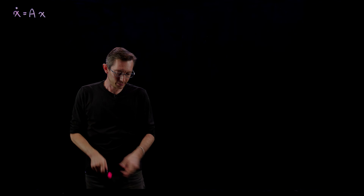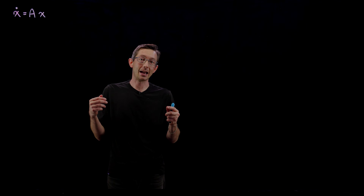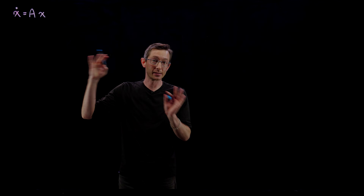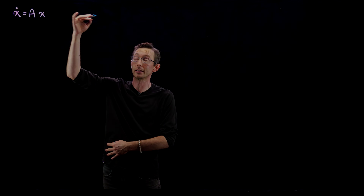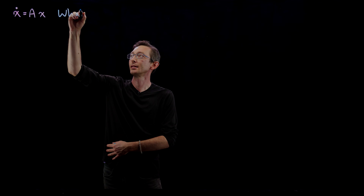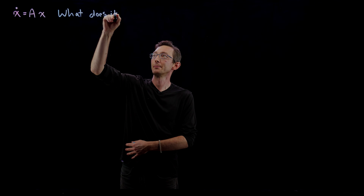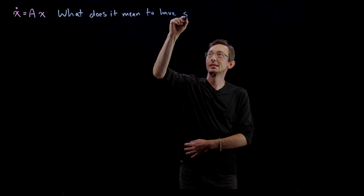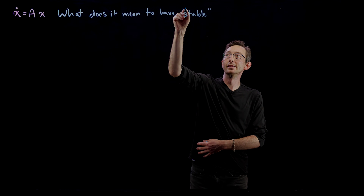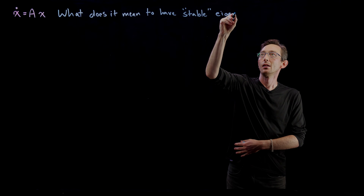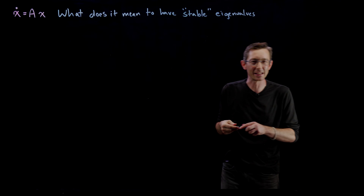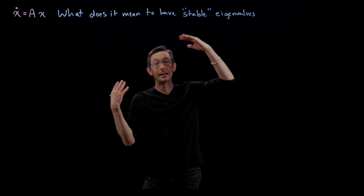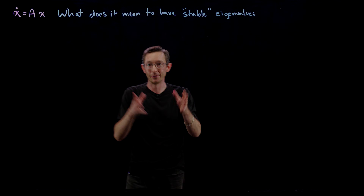I say a lot that this matrix A has stable eigenvalues or unstable eigenvalues. I want to slow down in this lecture and very clearly explain what I mean by that — what does it mean to have stable or unstable eigenvalues? I use this phrasing all the time, and I want to make it very clear what I mean when I say the A matrix has stable eigenvalues.